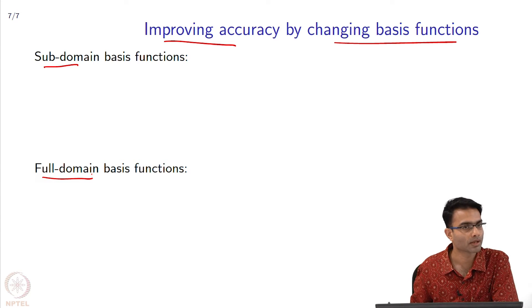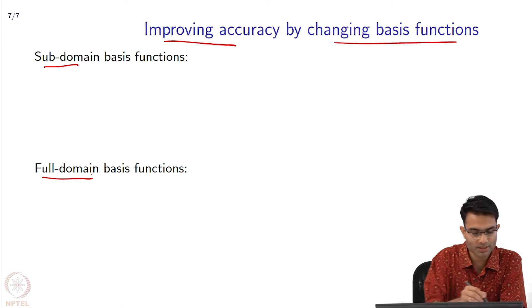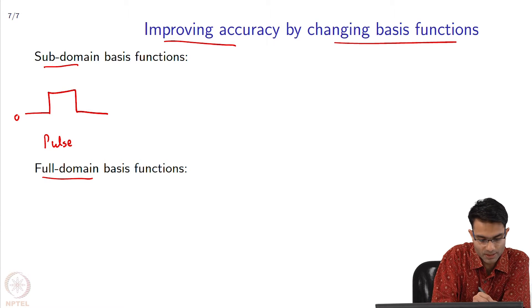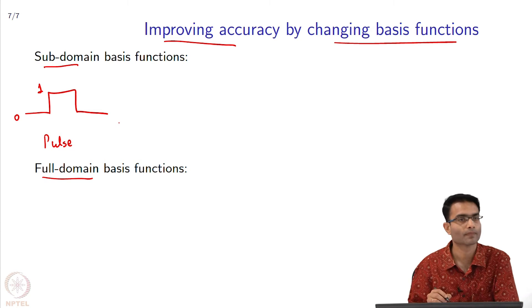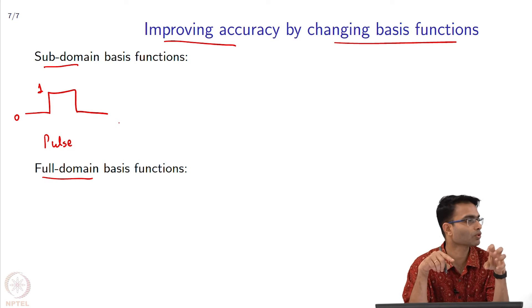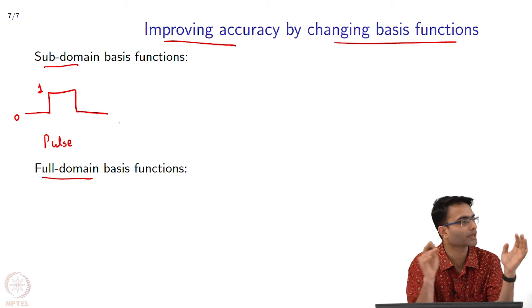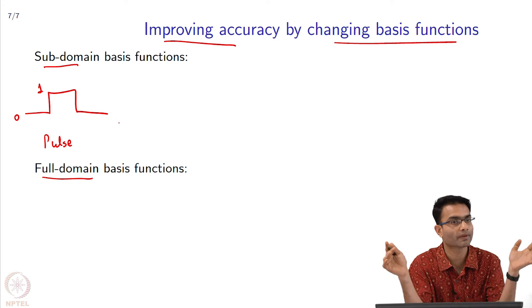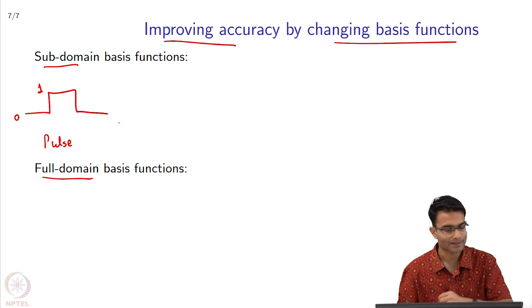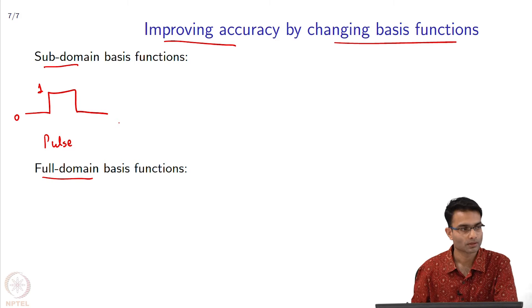What does this mean? The pulse function which you already saw—it is 0 over here and 1 over here. This basis function is non-zero only in a sub-domain of the entire domain, it is not non-zero everywhere. That is why this is called a sub-domain basis function.